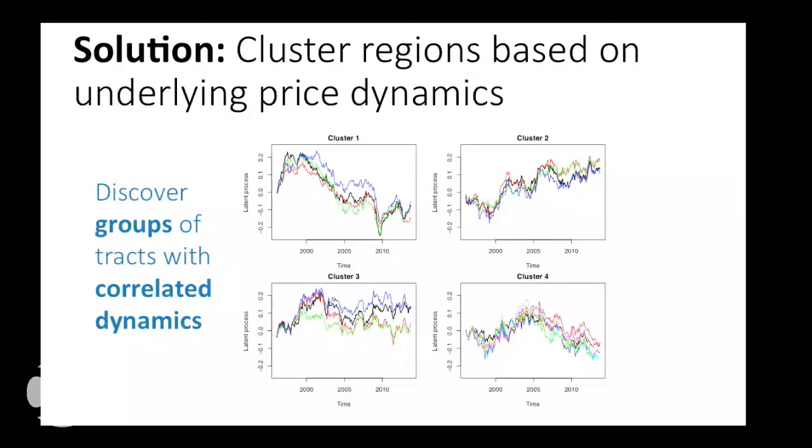What we're going to do is discover regions that behave similarly, because if we can discover this structure, we can share information between similar regions to improve our estimates. This is actually what real estate agents do — if there's no comparable in your neighborhood, they look at neighborhoods they believe are similar. The question is: how can we learn this kind of structure from the data?